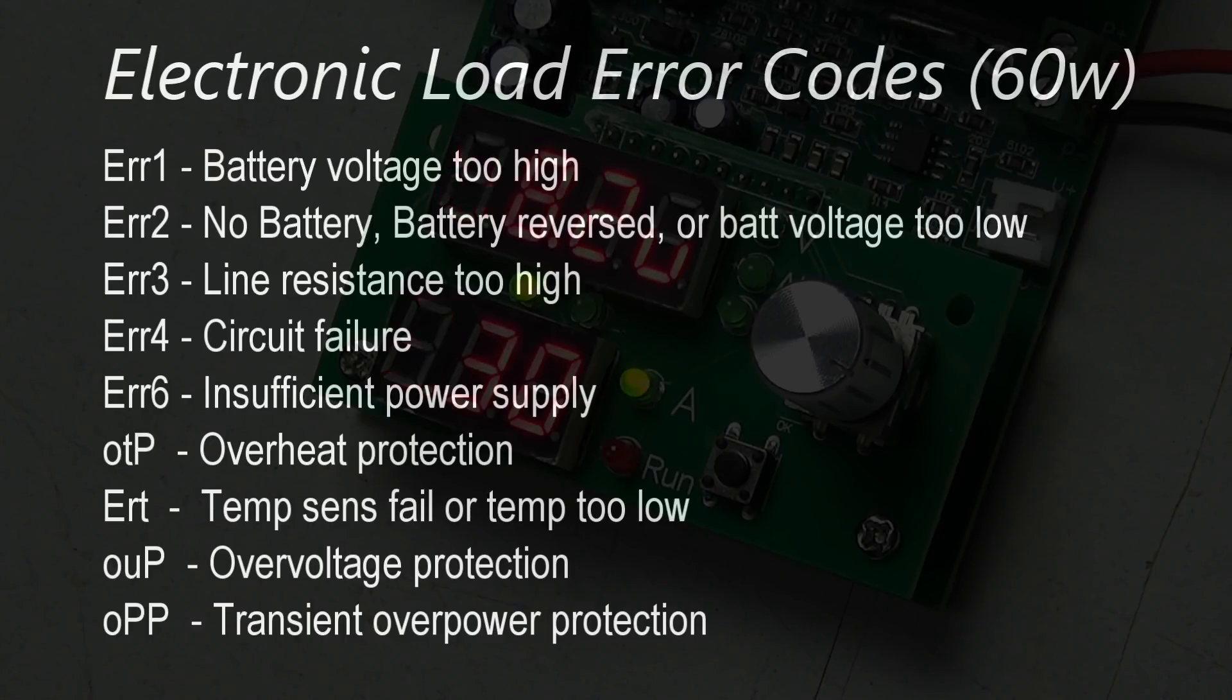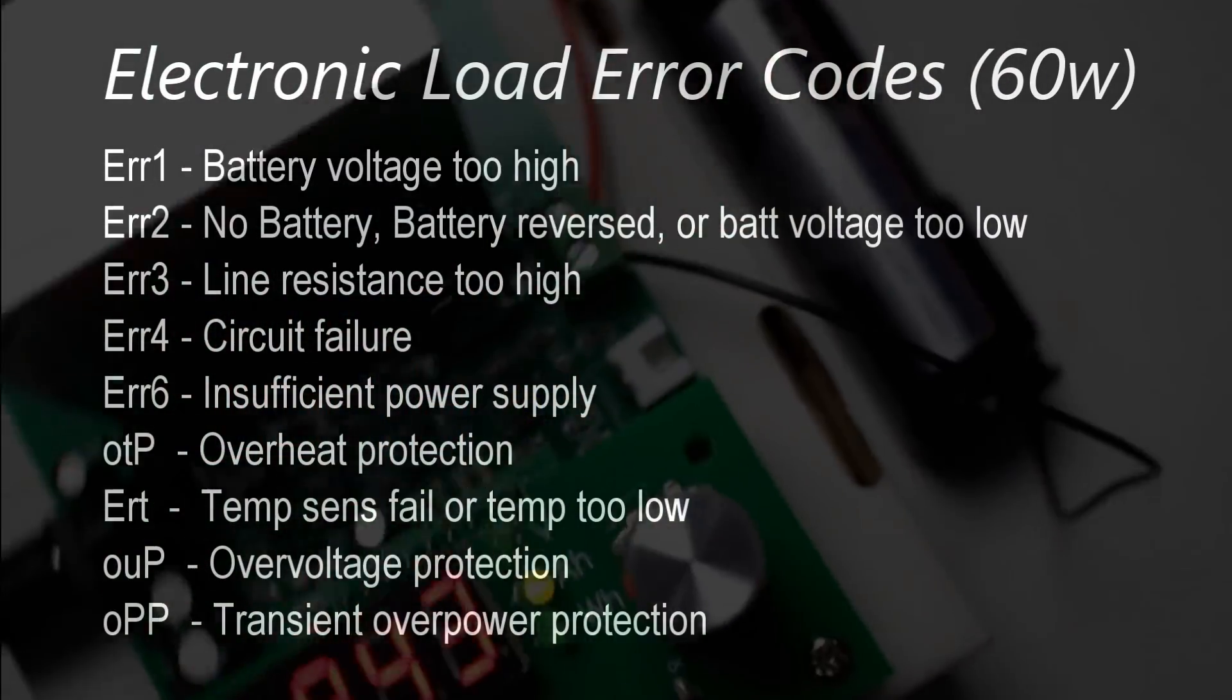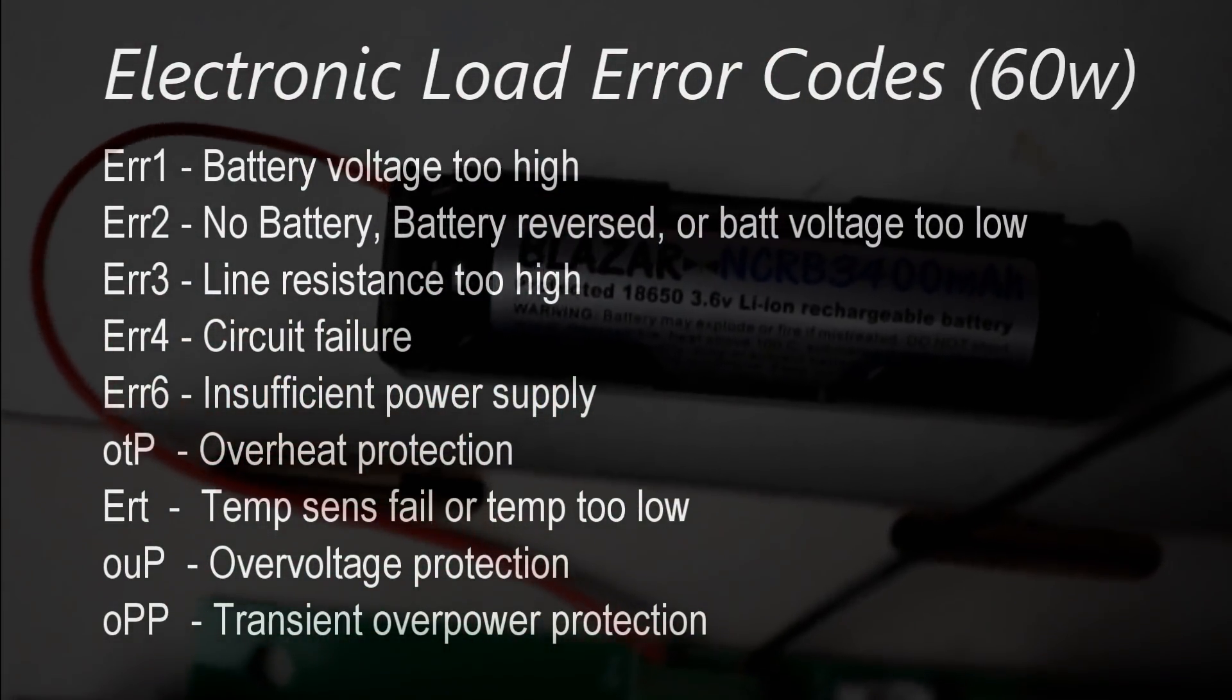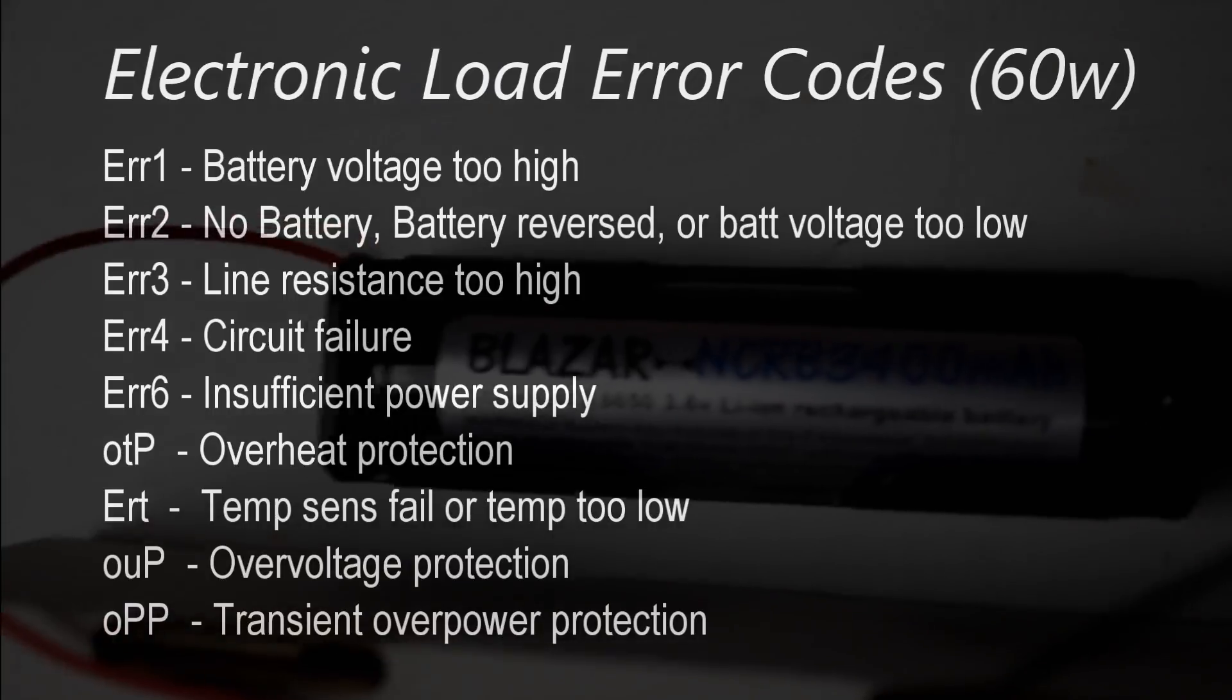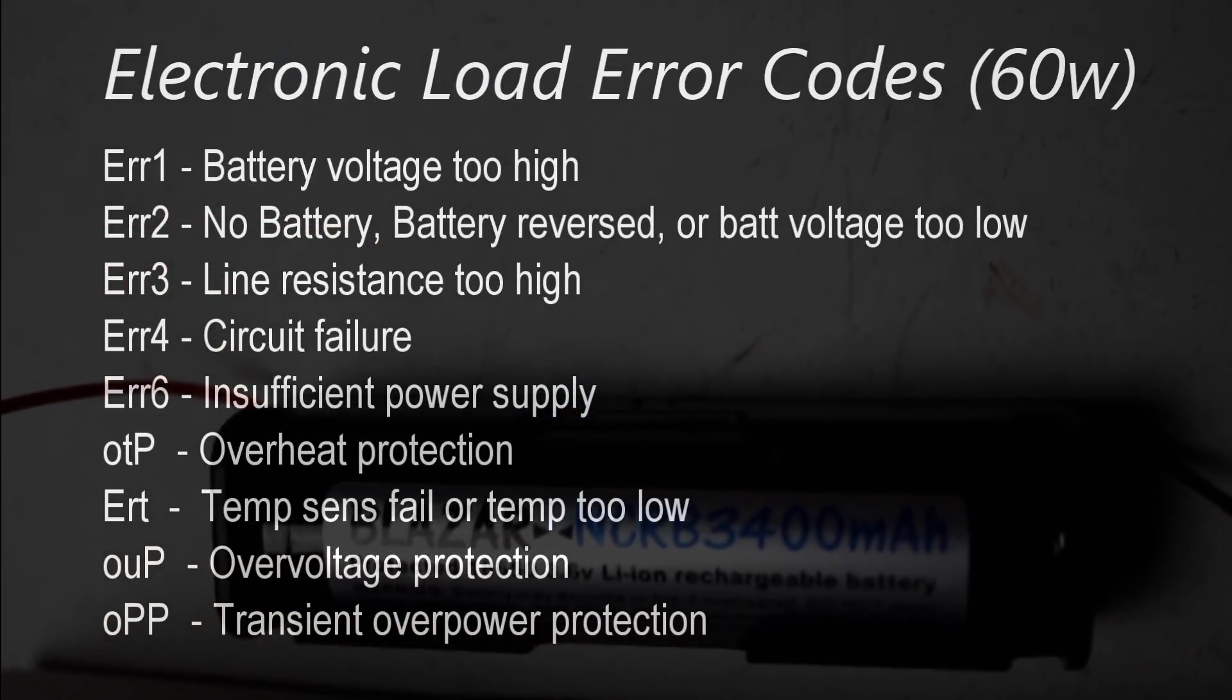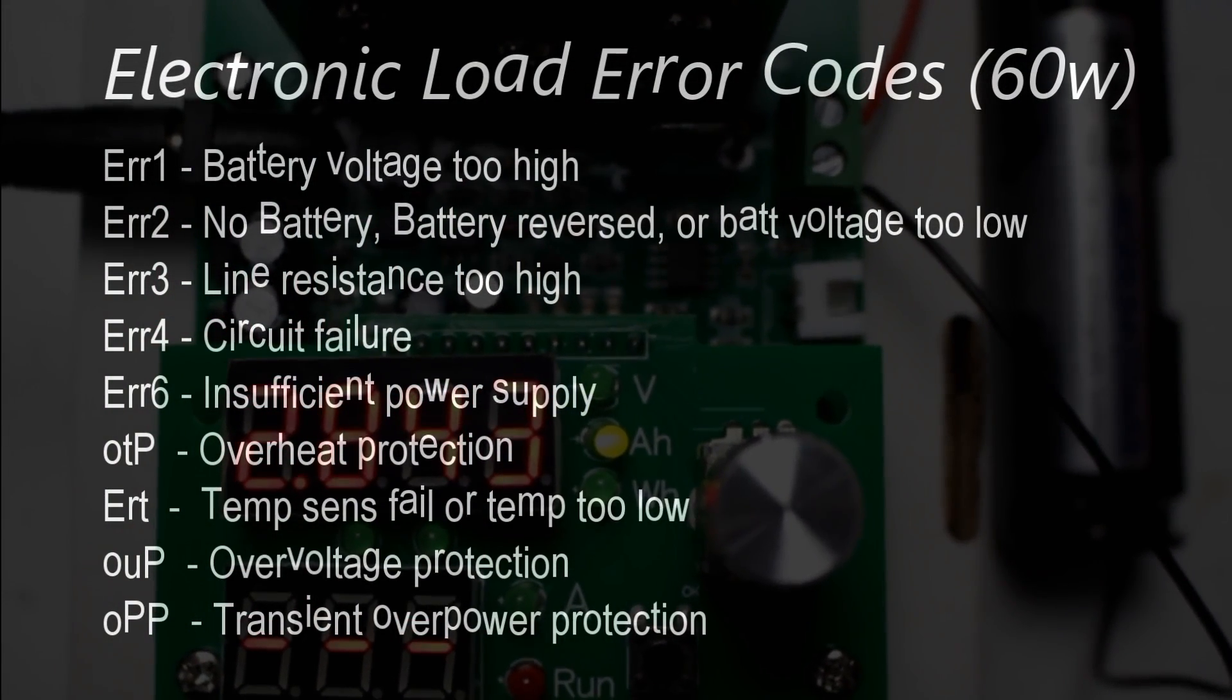Error six, working power is inappropriate, means your external 12 volt power supply is probably below 0.5 of an amp and you just need a more robust power supply. OTP means that something is overheated and the overheating protection has kicked in. ERT means the temperature sensor failed or the temperature is too low, so there is a minimum operating temperature I think it's five degrees celsius or maybe even negative five celsius. OUP is over volt protection, and OPP is transient over power protection.